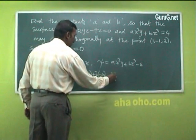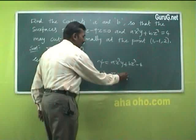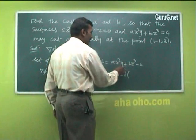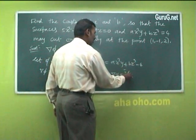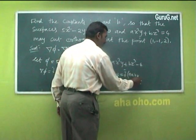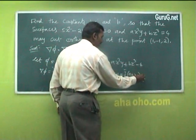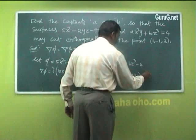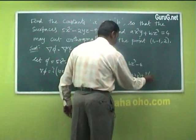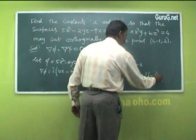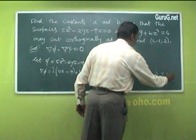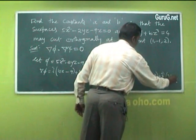Similarly, del ψ = i·(∂ψ/∂x) + j·(∂ψ/∂y) + k·(∂ψ/∂z) = i·(2Axy) + j·(Ax²) + k·(3Bz²).